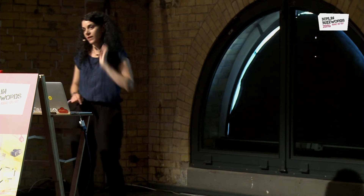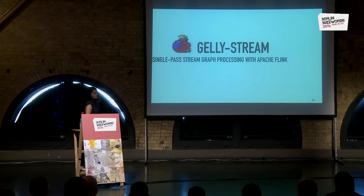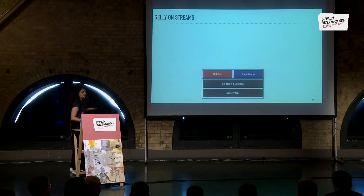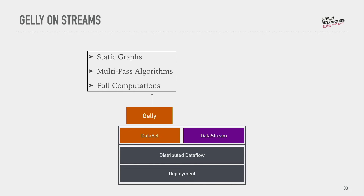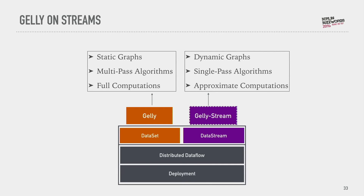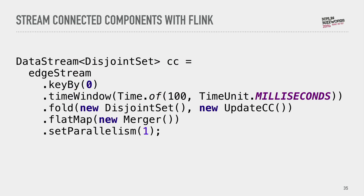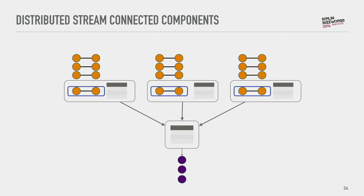That's what I'm trying to do with a colleague of mine at KTH in Stockholm. We have built a graph streaming prototype on top of Apache Flink called Jelly Stream. If you're familiar with Flink, it has two APIs — one for batch, one for streaming. For the batch API, we have a graph processing API called Jelly for static graphs and iterative algorithms. What Jelly Stream would be is an API on top of the streaming API of Flink for dynamic graphs, single-pass algorithms, using summaries, and probably giving you approximate computations.